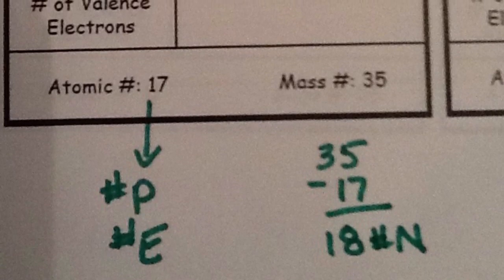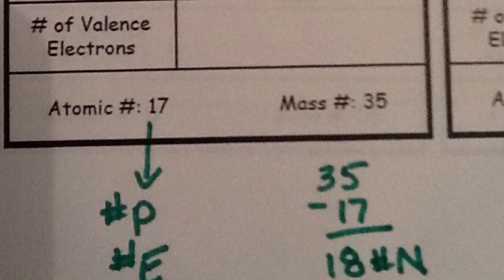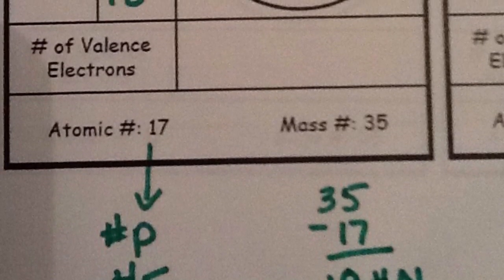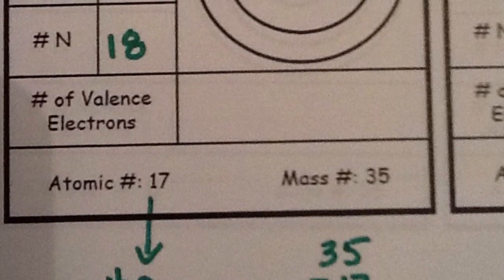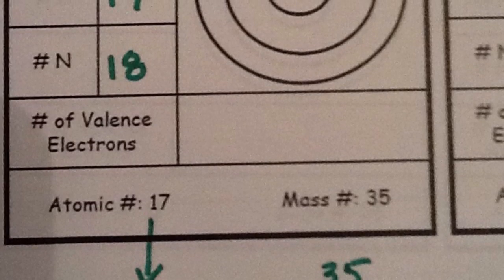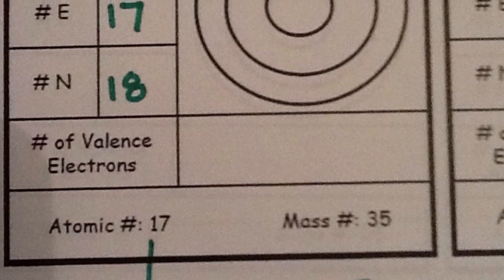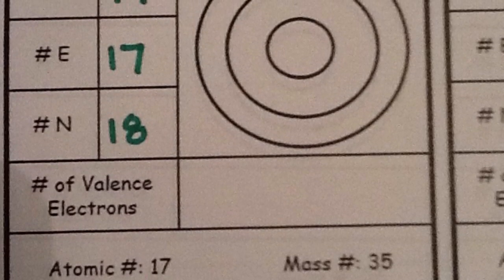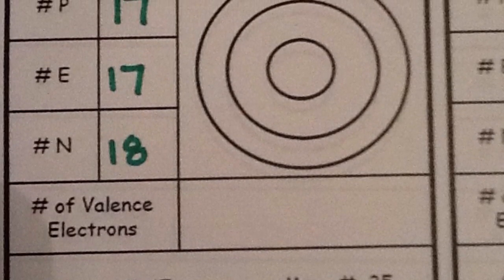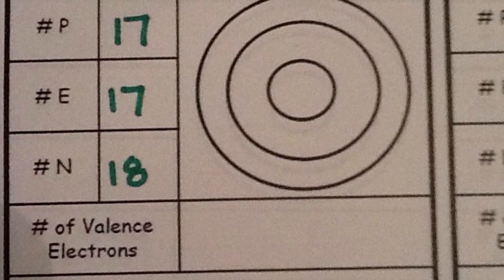With chlorine the atomic number is 17 and the atomic mass is 35. The atomic number will always tell us the number of protons and electrons in the atom. The atomic mass is the total number of particles in the nucleus, which is protons and neutrons. So if we have 35 particles in the nucleus and we know that 17 of them are protons, the other 18 must be the neutrons.